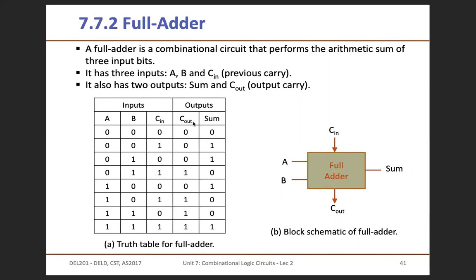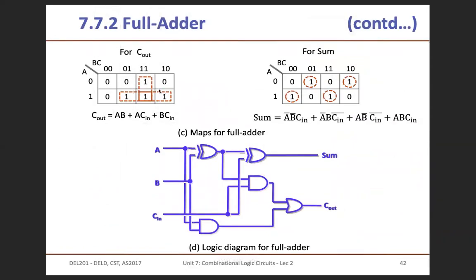Again with the help of a K-map, we find the boolean expression for C-out and the boolean expression for sum. After simplification of C-out and sum using the K-map, we reach the final logic diagram of the full adder. You can do the simplification for C-out and sum and try to analyze this circuit.